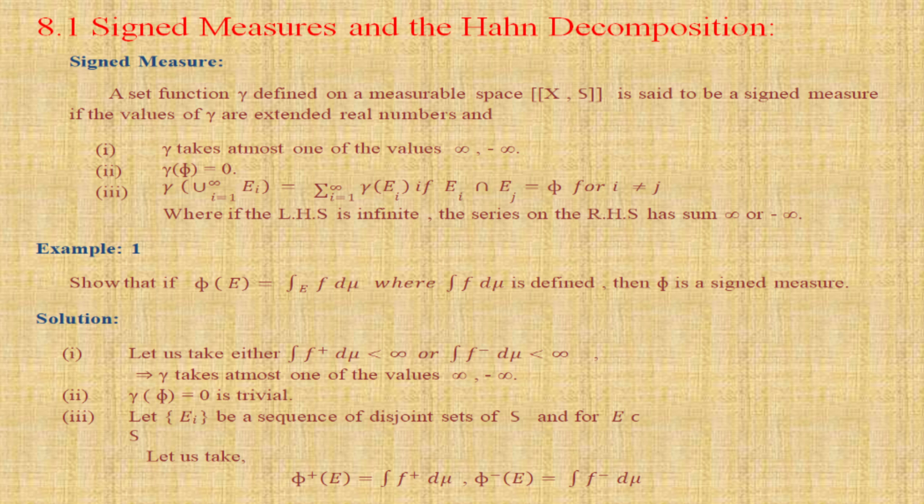The next example: show that if φ(E) = ∫_E f dμ, where ∫f dμ is defined, then φ is a signed measure. The proof: the first condition — measure is a positive one. ∫f⁺ dμ < ∞ means it is positive, or ∫f⁻ dμ < ∞, which implies ν takes at most one of the values +∞ or −∞. The second one: ν(∅) = 0, since the set is empty, the measure is also 0.